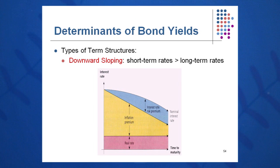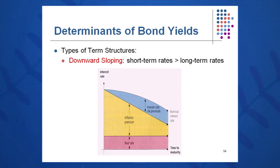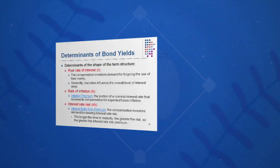Very occasionally, when interest rates are indicating that rates might be headed downward, you'll very rarely see this term structure slope downward. In that case, short-term rates are paying more than long-term rates. I've seen that maybe two or three times in my financial career — not very often at all.